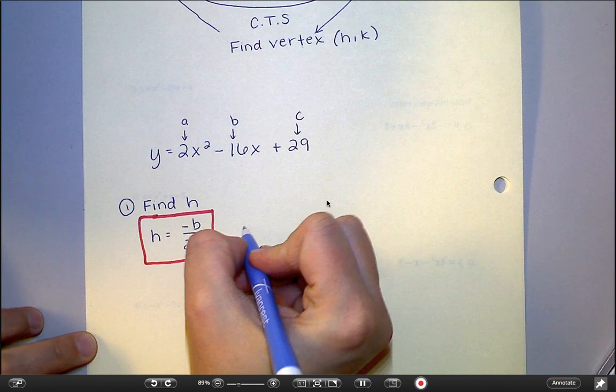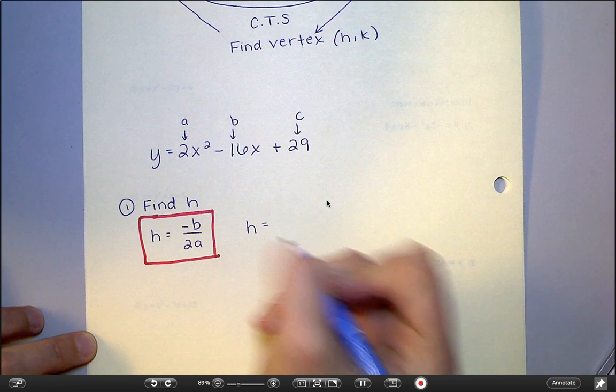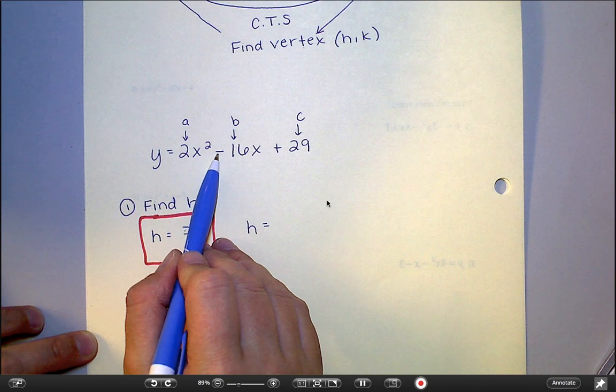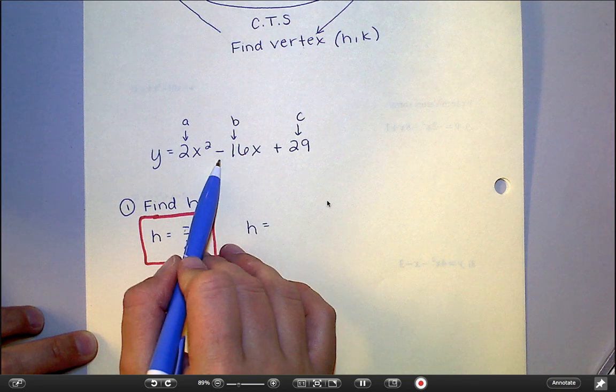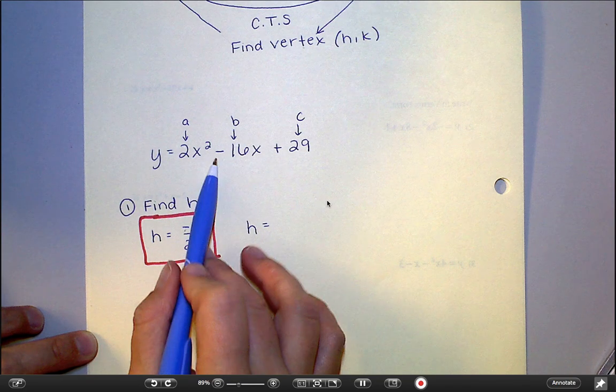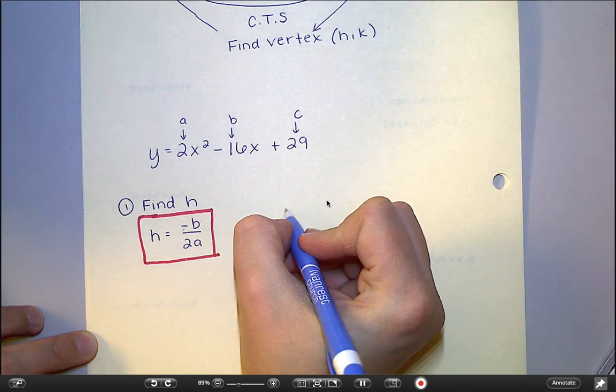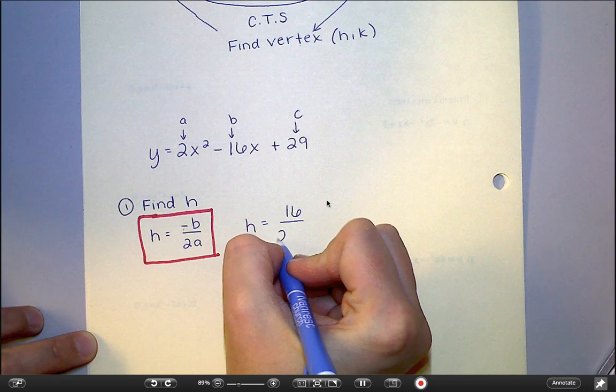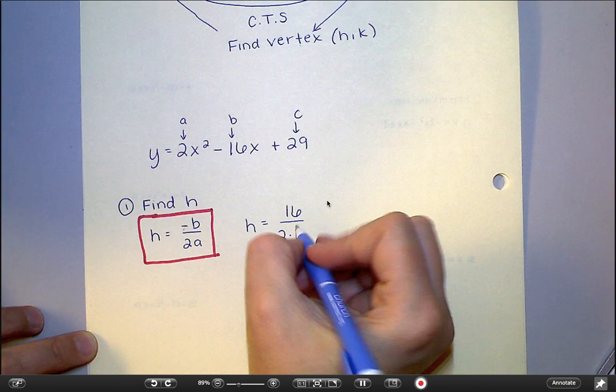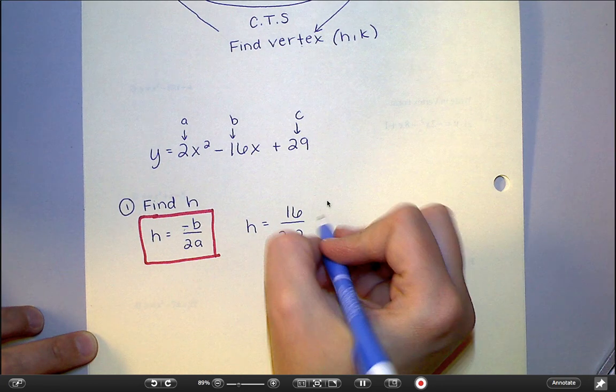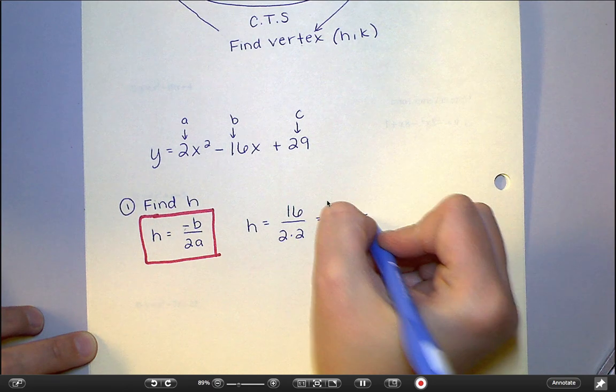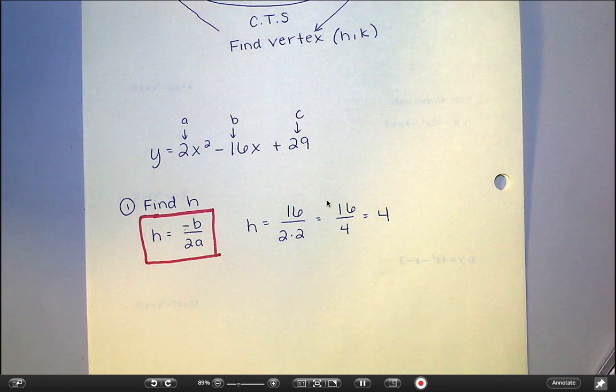So in this problem, I would do h by doing negative b. Now be careful here, because my b is already negative. So if I were to do a negative, negative 16, that's really just going to be a positive 16. Divided by 2 times the a value, which is 2. That's really 16 divided by 4, which is 4.